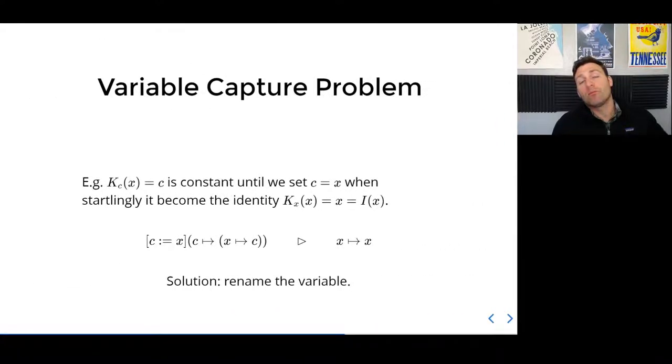What can go wrong? Well, we can hit this classic problem of variable capture, which we saw in our previous video. You can have a situation where something begins like a constant, but after fiddling with the wrong substitutions, you end up with the identity, which is truly a violation of the concept of constant. The problem here is that we cannot simply substitute without some orders of operations, some set of rules.